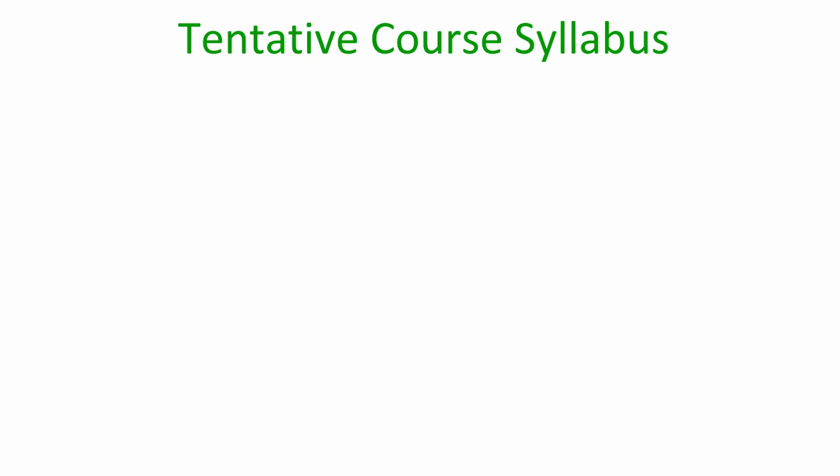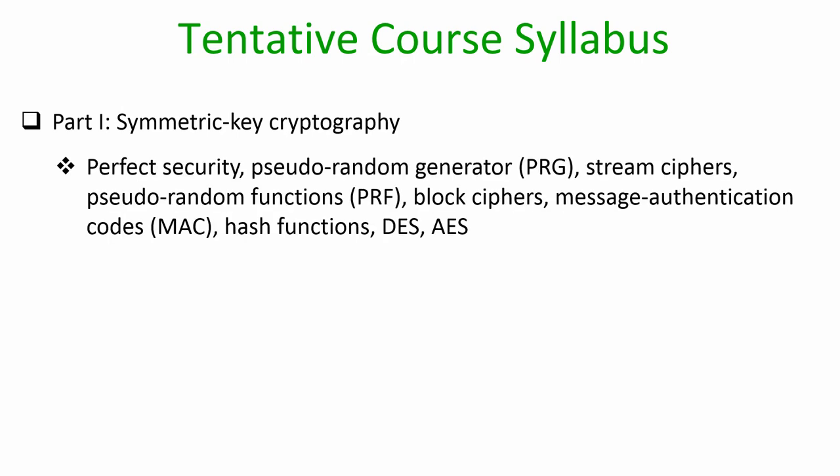As far as the course syllabus is concerned, roughly the course is divided into two parts. The first part is going to discuss symmetric key cryptography where we are going to discuss perfect security, pseudo-random generators, stream ciphers, pseudo-random functions, block ciphers, message authentication codes, hash functions, and some of the practical constructions of block ciphers like DES and AES.